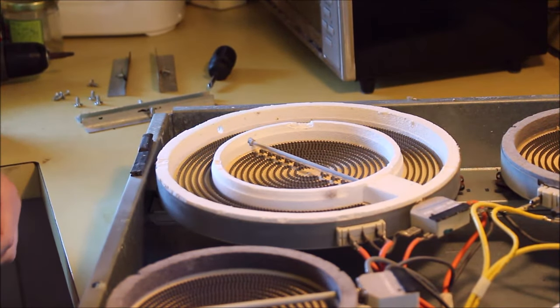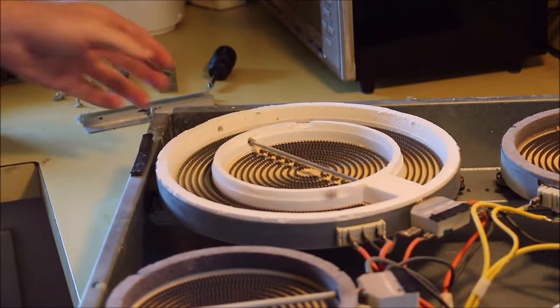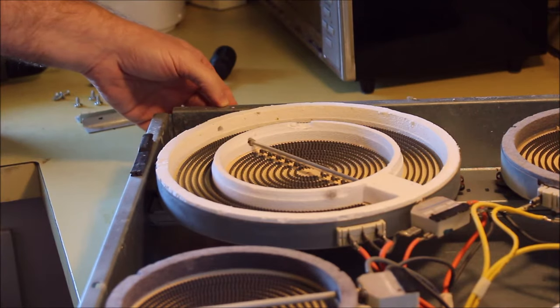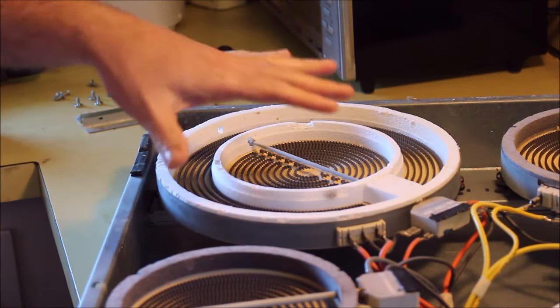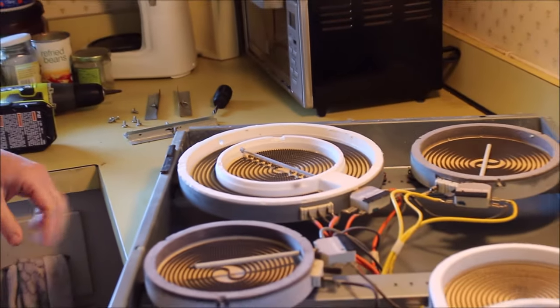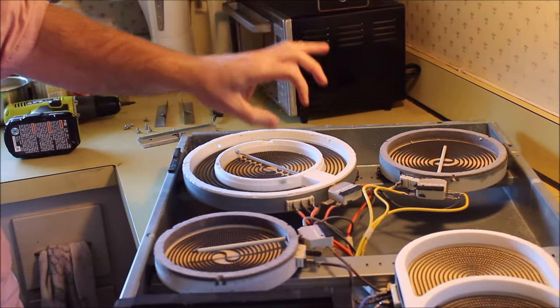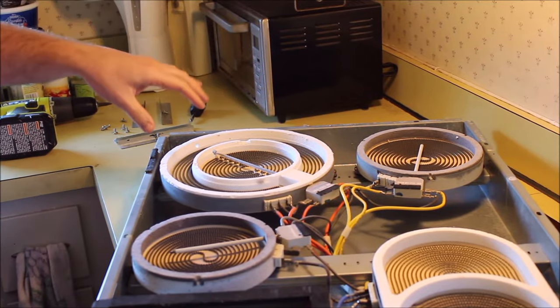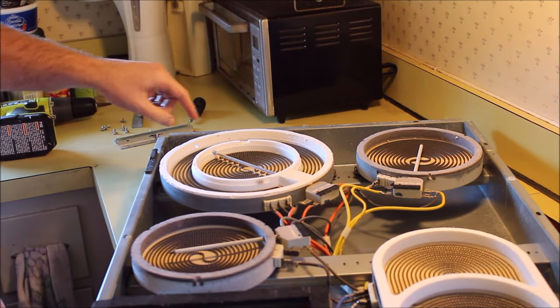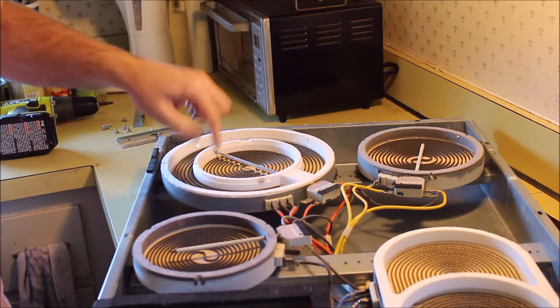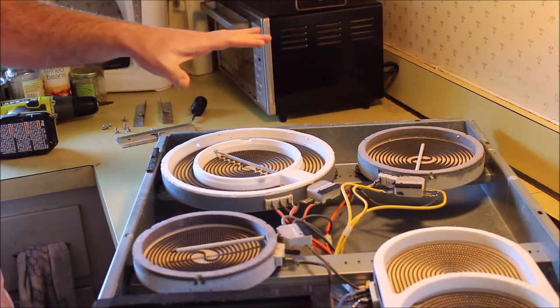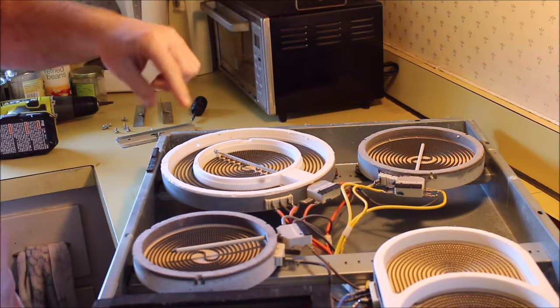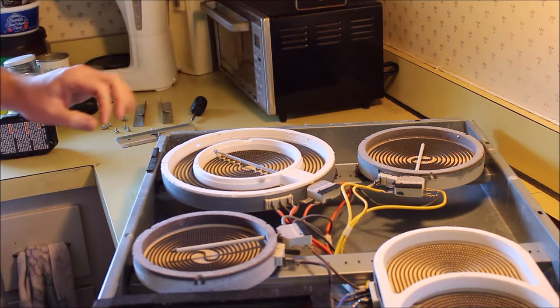So now we have the glass cooktop off of the main cooktop assembly. We've exposed all the burner elements here, the control switches. So now we're going to get into testing the circuitry here to see if there's continuity in these burners using a voltmeter. We're going to measure the resistance of these different coils to see is it the burner element, is it the control switches, or is it the wiring that's messed up.